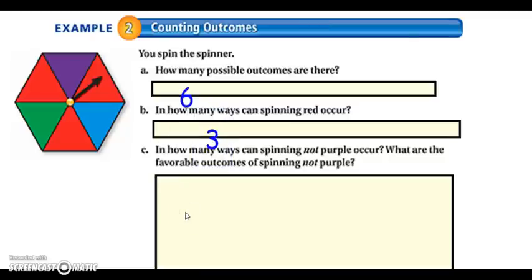For C, I'm looking at how many ways can spinning not purple occur? Okay, well not purple, so I want everything but, which would mean there are five ways to spin not purple. One, two, three, four, five.